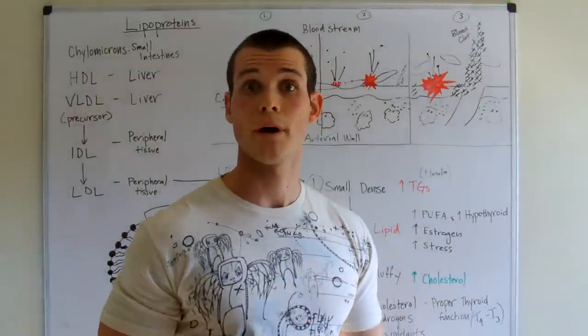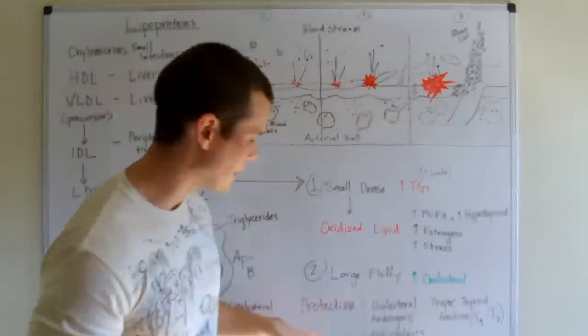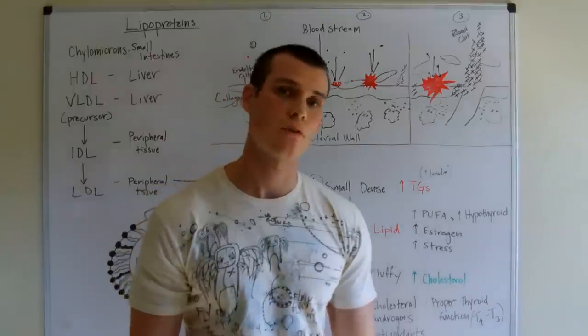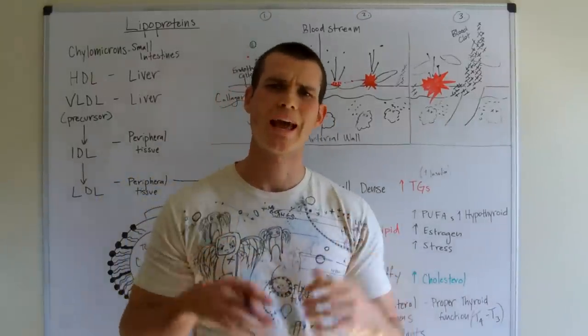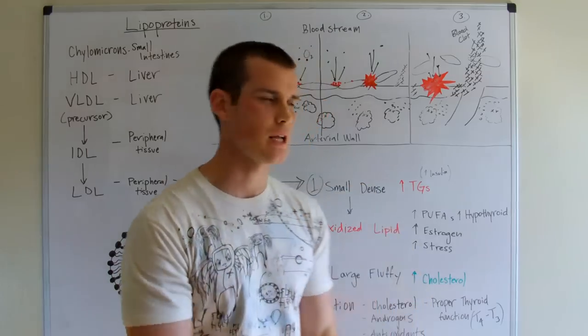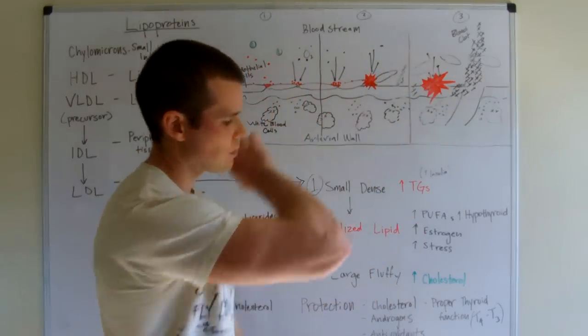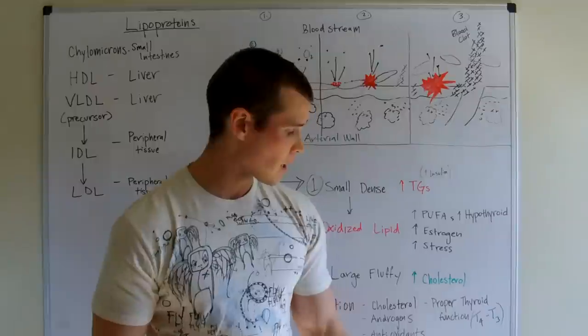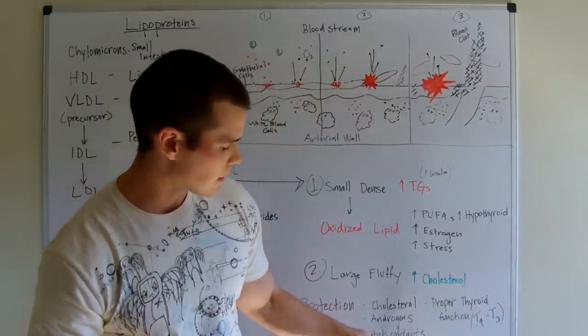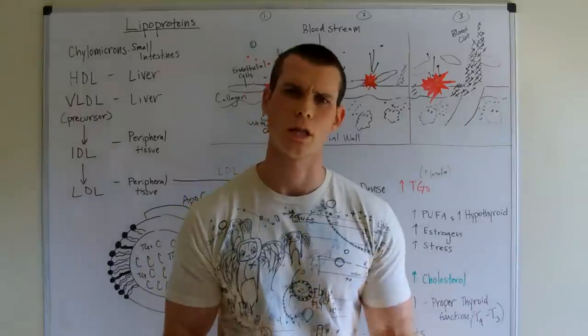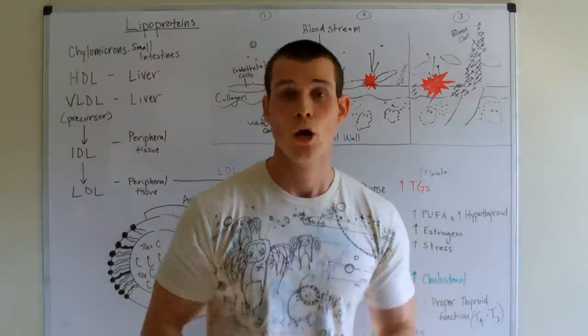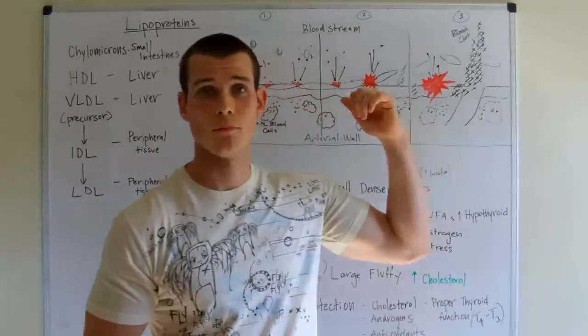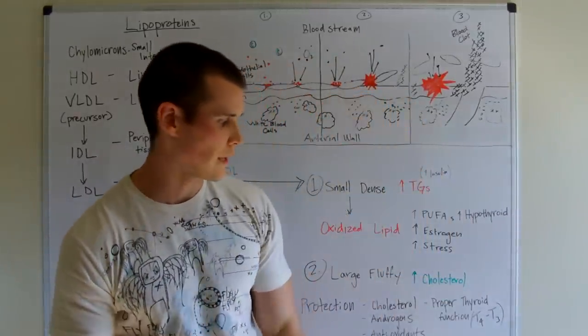So what we can do about it, what we need to look at is some protective agents. So protective agents, first of all, would be cholesterol and androgens because those are going to act like structural antioxidants that are protecting us from this whole system. From there, what we also want to look at is antioxidants such as selenium, other fat soluble vitamins, vitamin C, etc. Those are also going to act to decrease the likelihood of this whole thing happening.